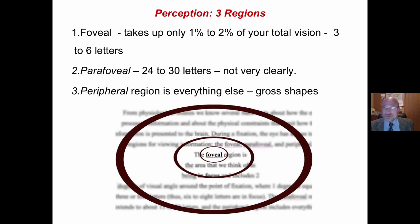We have three regions of perception. The foveal takes up only one or two percent of your total vision. Three to six letters we can see clearly. The foveal is thought to be the size of a grape at arm's length. Outside that is called the para-foveal. We can see about twenty-four to thirty letters, but not very clearly. Peripheral is everything else, and we see gross shapes.